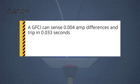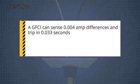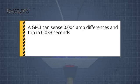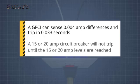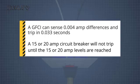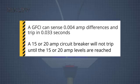A GFCI can sense current differences as small as 0.004 amps and trip in a very short time — 0.033 seconds. At that amount of time, you would receive a shock, but it would not cause serious injury. A typical 15- or 20-amp circuit breaker used in your power panel at home will not trip until the 15- or 20-amp levels are reached. Their purpose is to protect equipment and prevent fires, and they do not provide protection from electrocution.